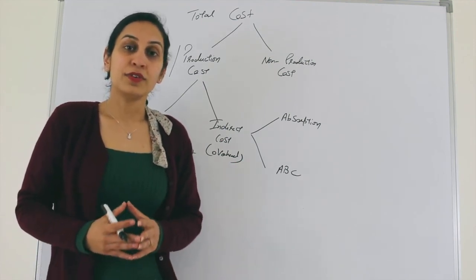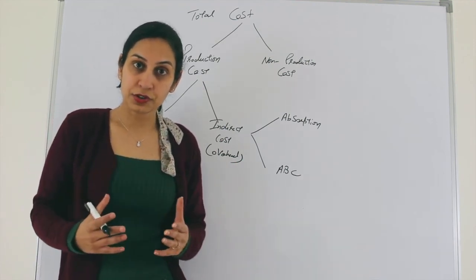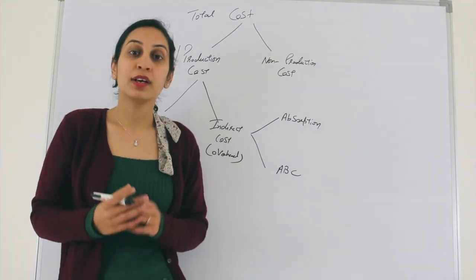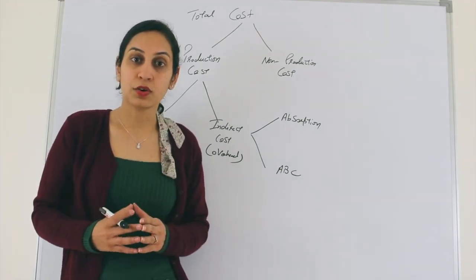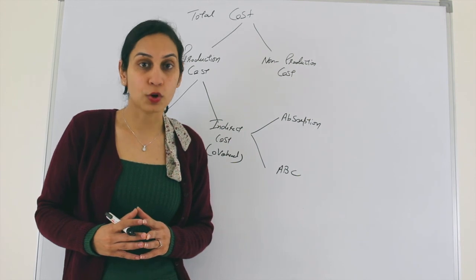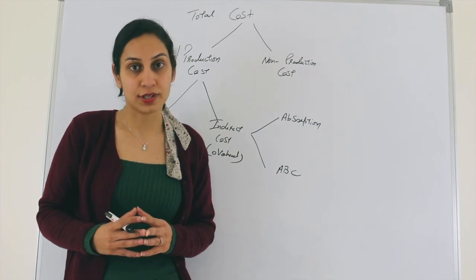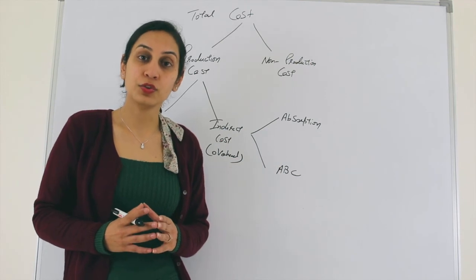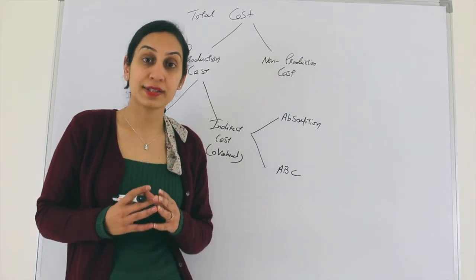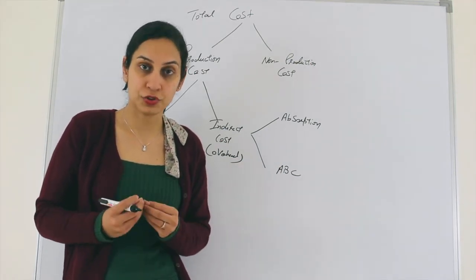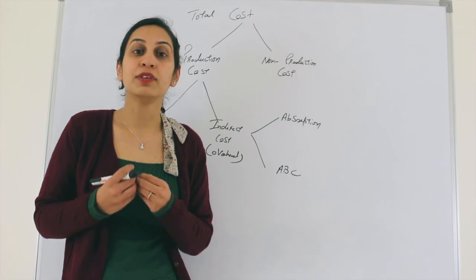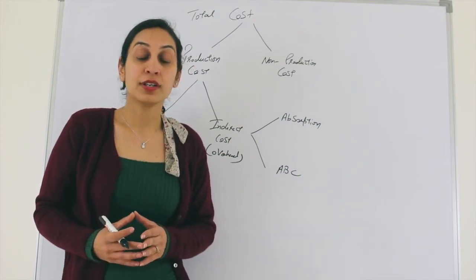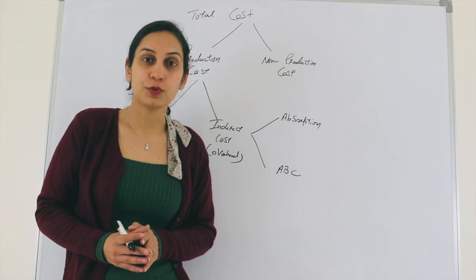Now we understand the basics of costing and how we can classify cost. In our next session we will be talking about a concept called absorption costing — a method which we use to classify indirect production cost or overhead and allocate it to products. Till then, stay tuned. I will see you soon.